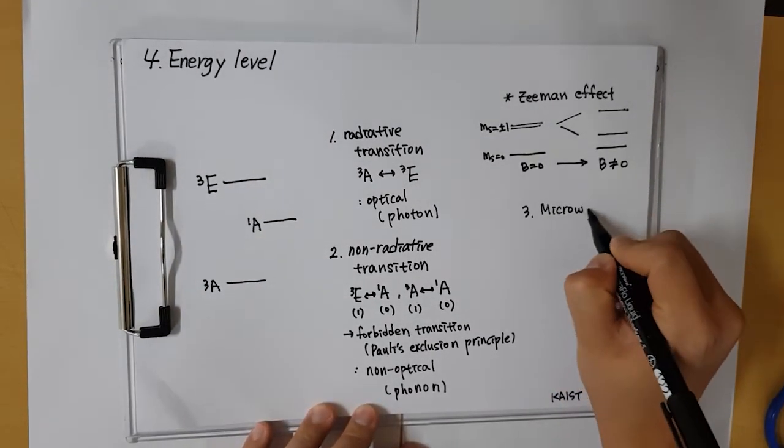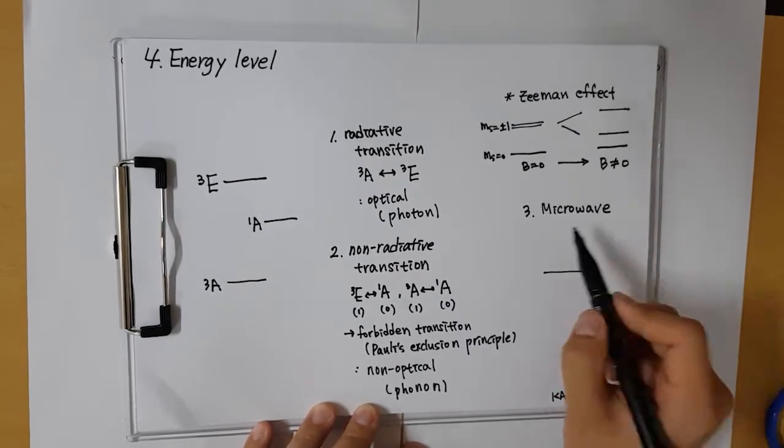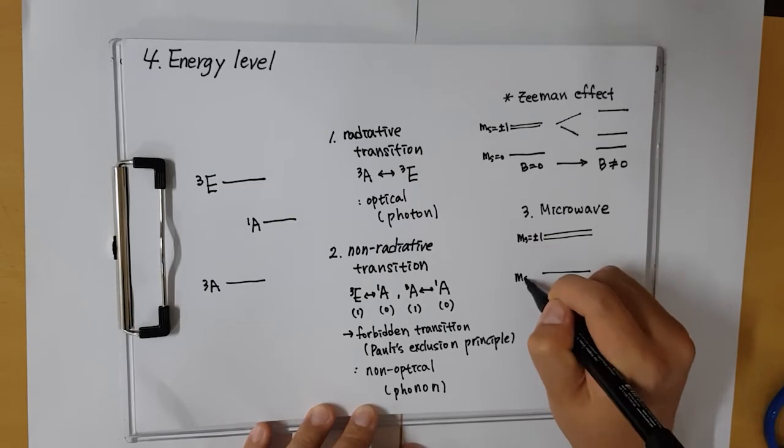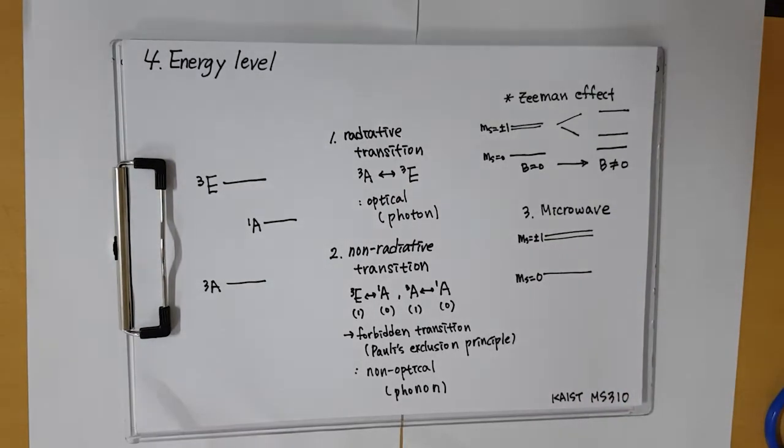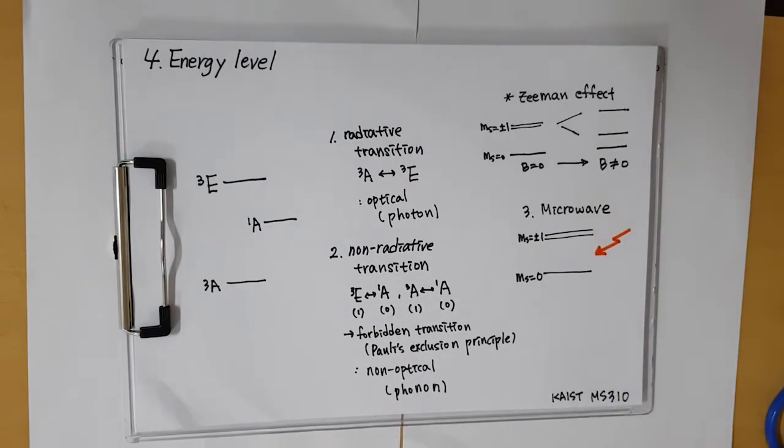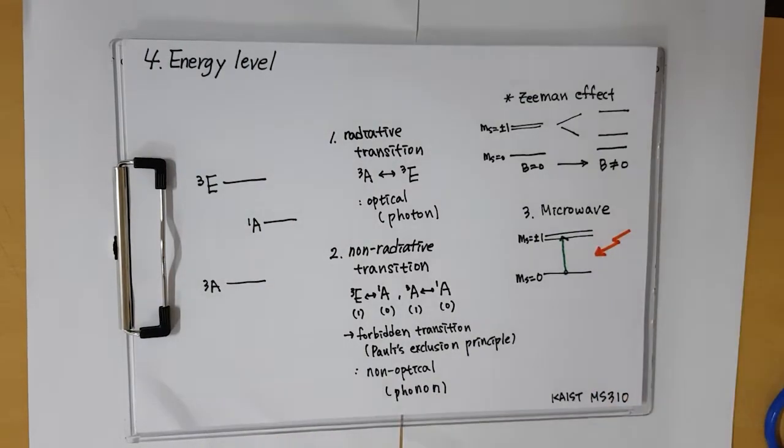And last concept is about microwave. The energy difference between the ms0 and ms plus minus 1 states corresponds to the microwave region which has frequency GHz. Therefore, if we radiate microwave to NV Center, there will be transition ms0 to ms plus minus 1.